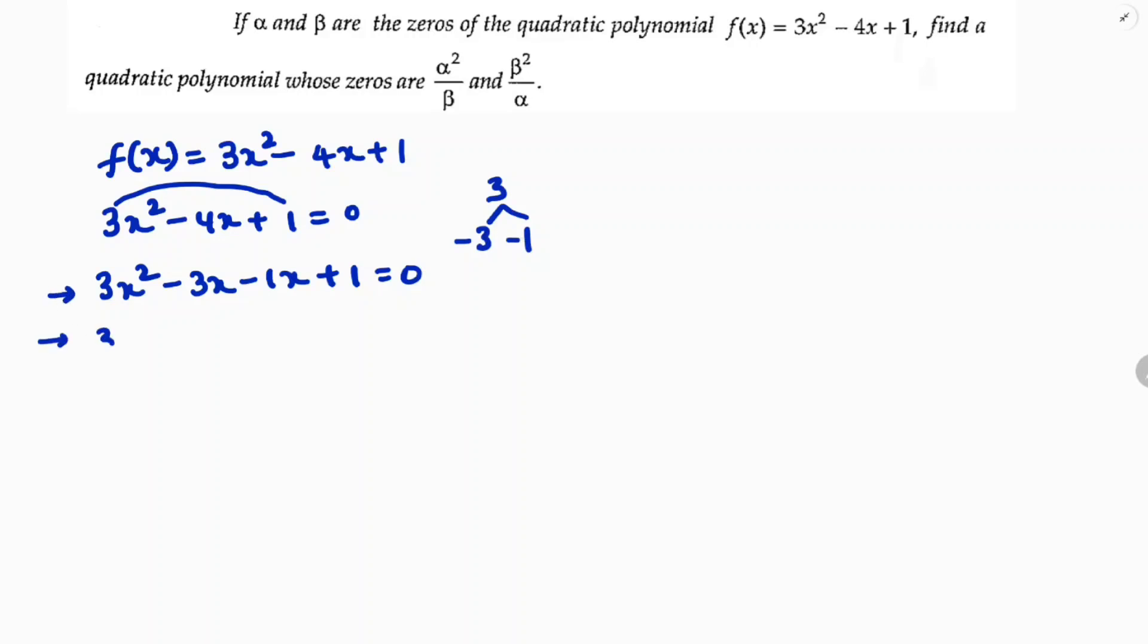In the first two terms if you take 3x common, x - 1, here -1 if you take common x - 1. So (x - 1)(3x - 1) = 0. x - 1 = 0, 3x - 1 = 0.